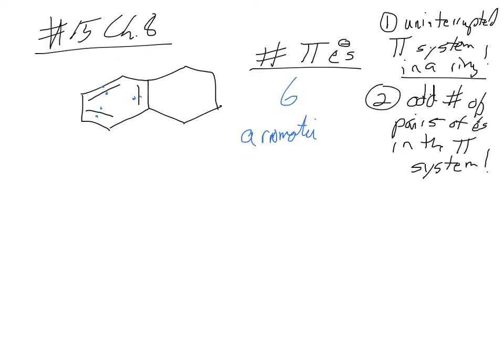The other example they have is a little different. The number of pi electrons — let me count: 1, 2, 3, 4, 5, 6, 7, 8, 9, 10. So we've got 10 pi electrons.